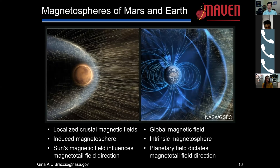To highlight the key differences between Mars and Earth: at Mars we have localized crustal magnetic fields, while at Earth there's a global magnetic field. At Mars it forms an induced magnetosphere; at Earth it's an intrinsic magnetosphere. At Mars, the sun's magnetic field influences the magnetotail field direction, whereas at Earth it's the planetary magnetic field that dictates the magnetotail.